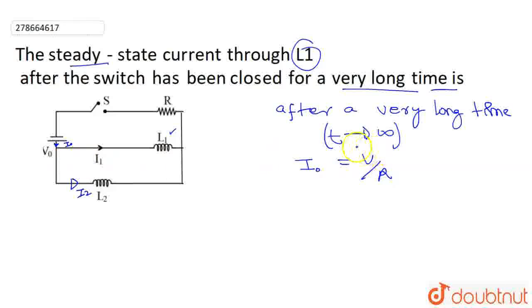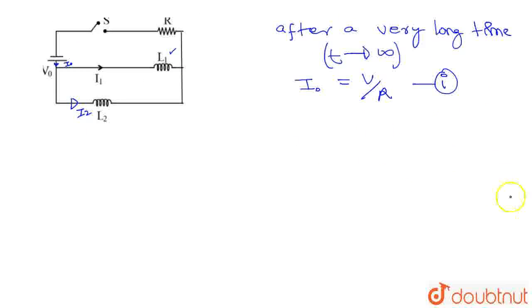We have V0, because we are considering the case where t is turning towards infinity. Let's name this as equation 1. Now, since this L1 and L2 are parallel, since the inductors are in parallel.